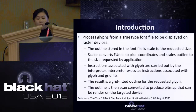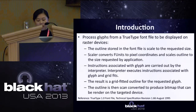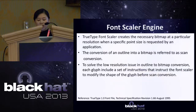This slide summarizes the process of a glyph being displayed on a raster device. First, the outline stored in font files is scaled to the requested size, and the scaler converts font units to pixel coordinates and outlines to the size requested by the application. The interpreter executes the instructions associated with the glyph and grid-fits it. The outline is then scanned and converted to produce a bitmap that can be rendered on the targeted device.